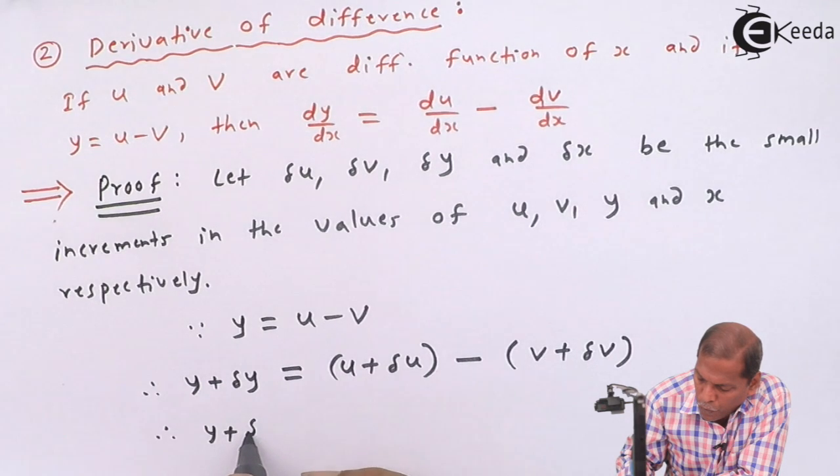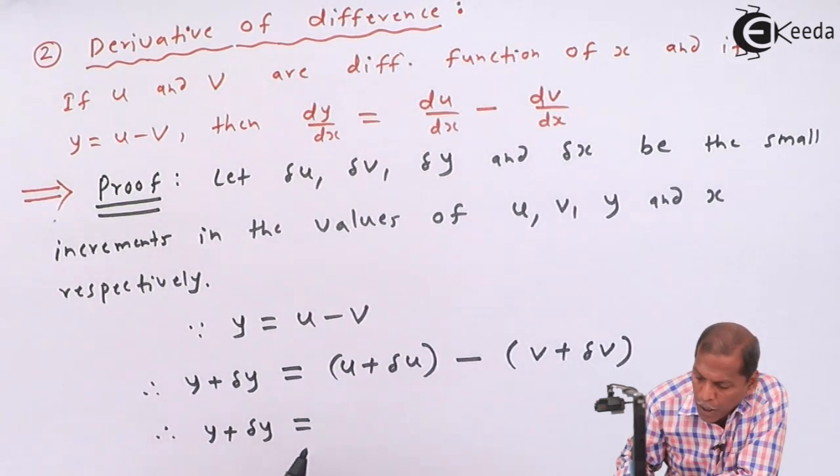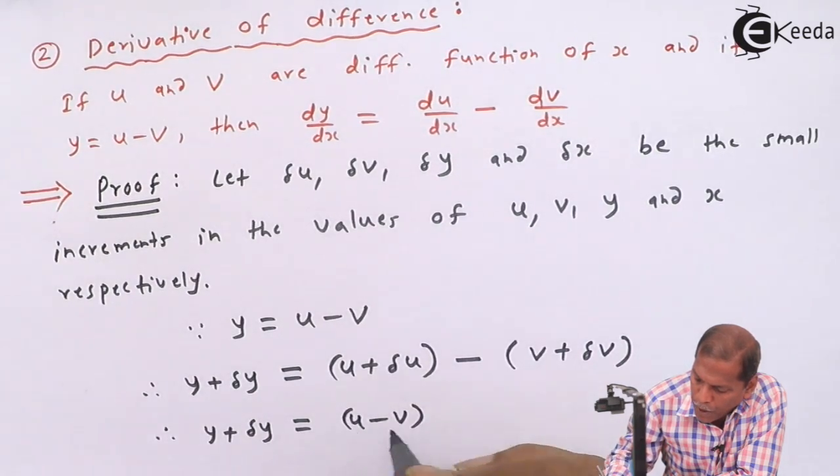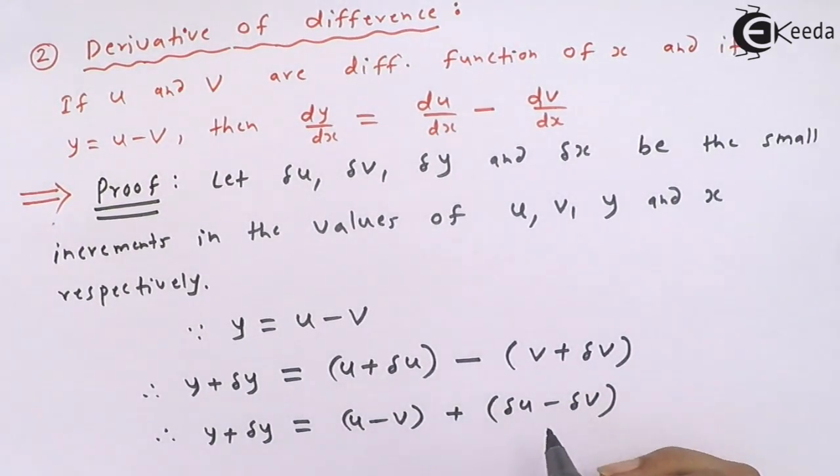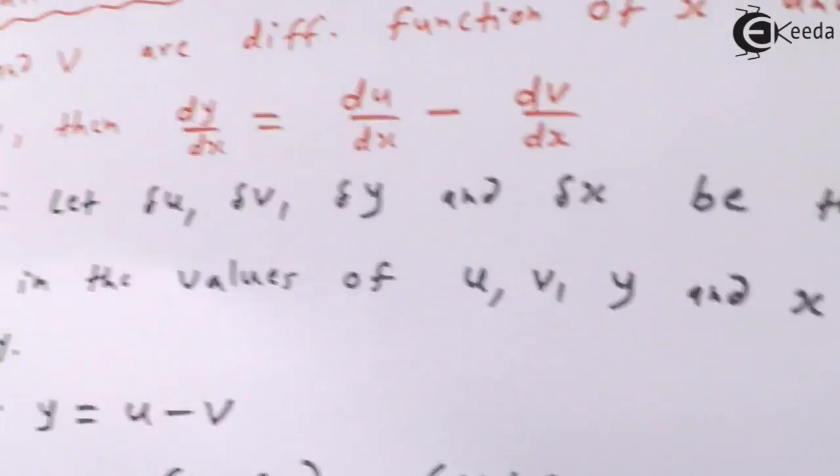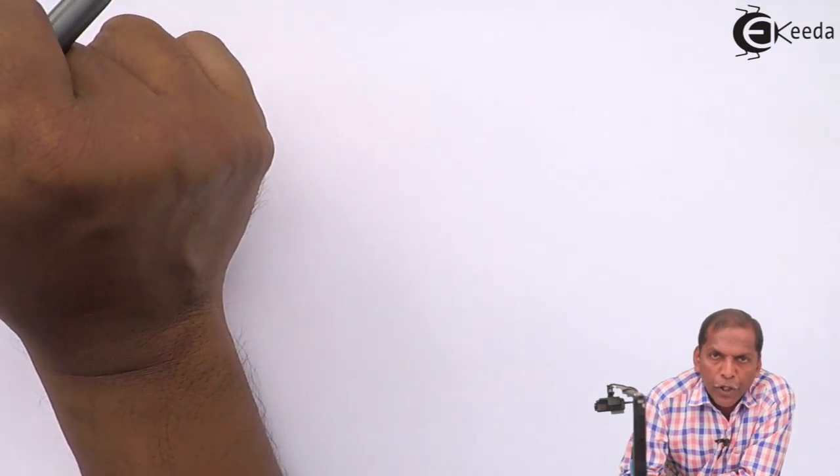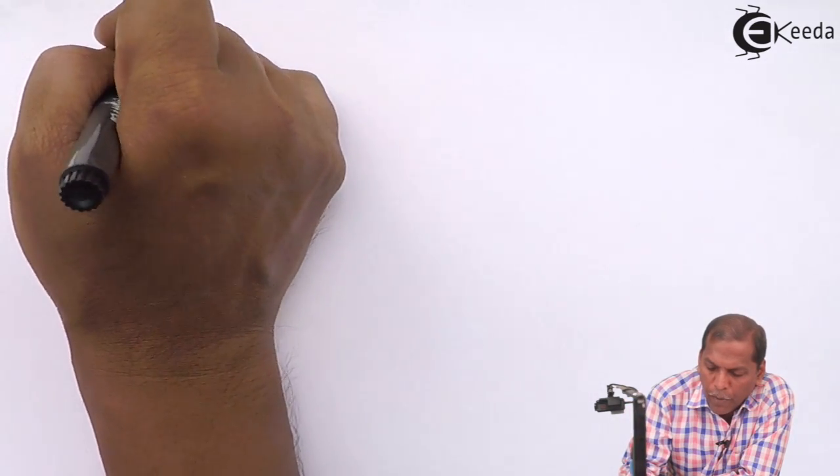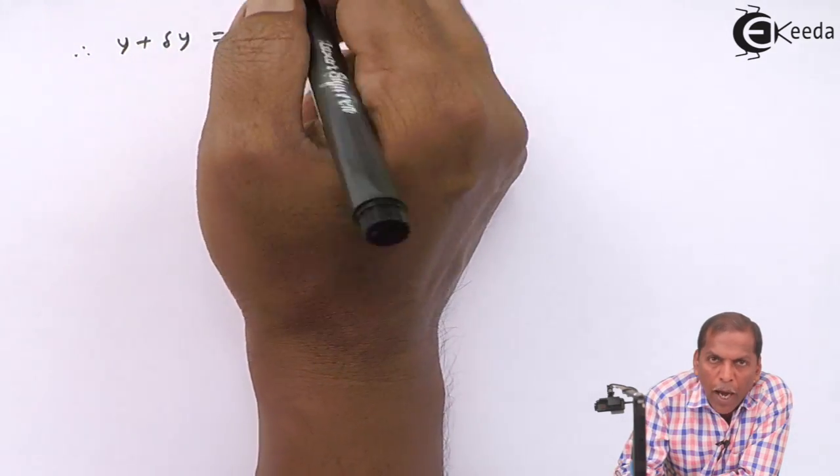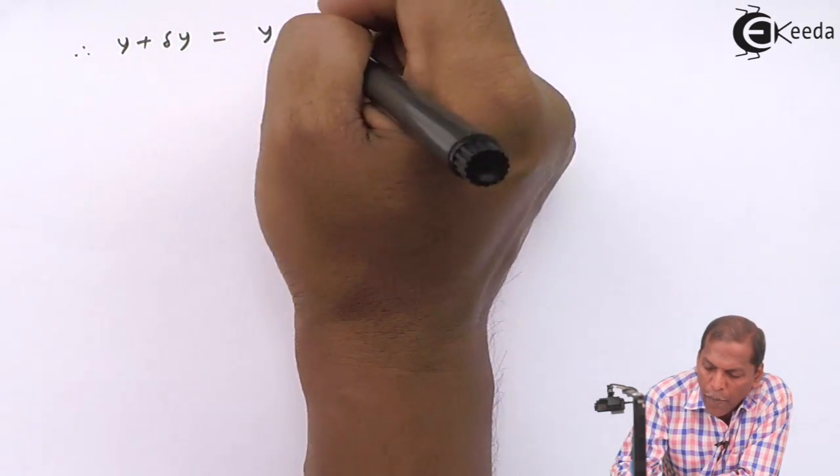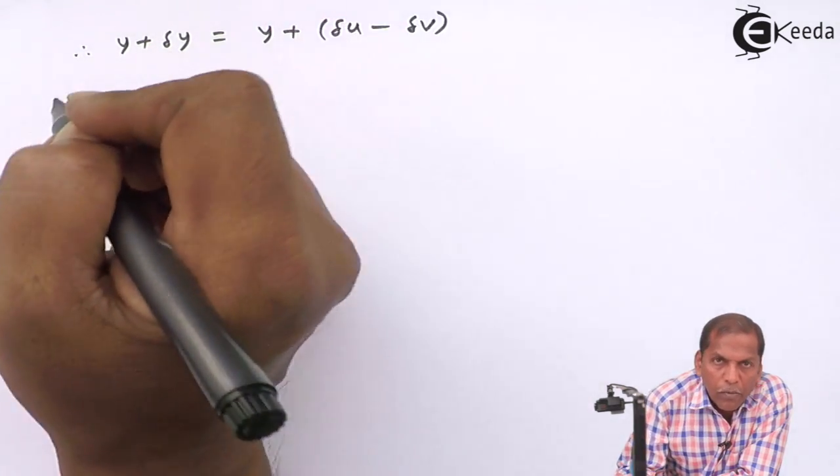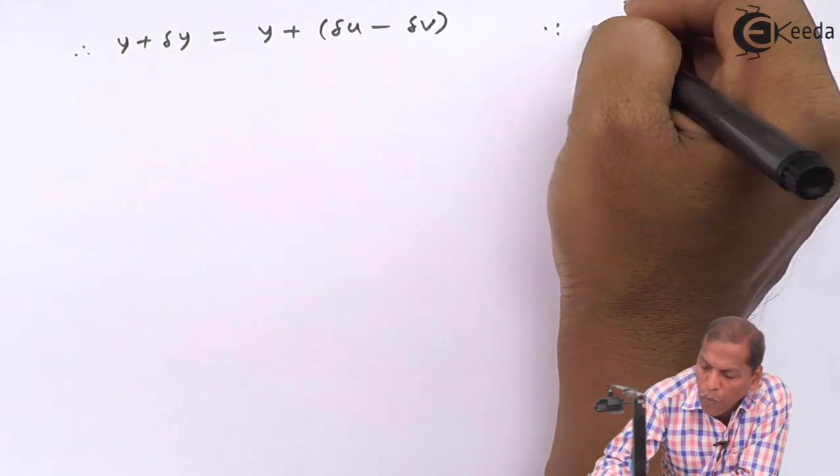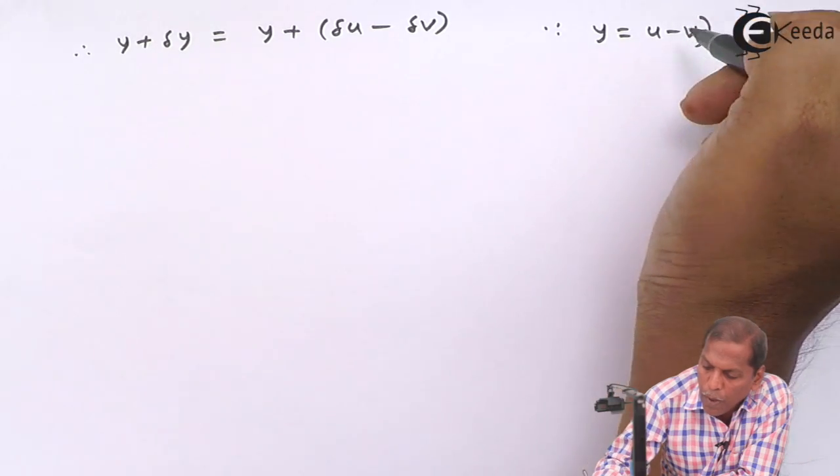Therefore y plus δy equals u minus v plus δu minus δv. Now for u minus v we substitute y, so the next step will be y plus δy equals y plus δu minus δv, since y equals u minus v.